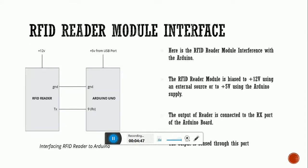This is the RFID reader module interface connecting to Arduino. The RFID reader's TX pin is connected to the Rx pin of the Arduino. 12 volts are required for the RFID reader and 5 volts for the Arduino. The RFID reader module is biased to plus 12 volts using an external source or 5 volts using the Arduino supply, and the output of the reader is connected to the Rx port of the Arduino board.